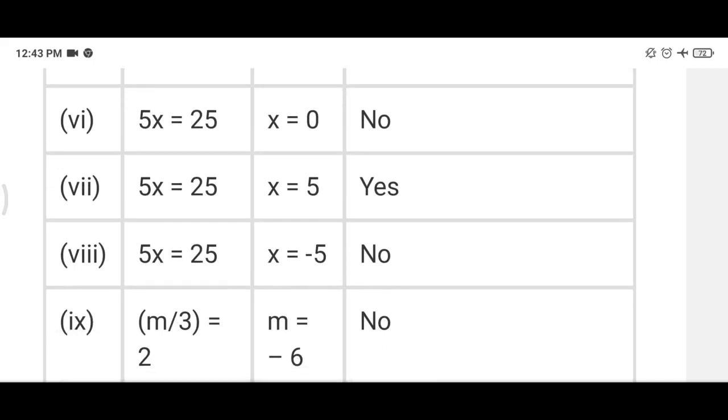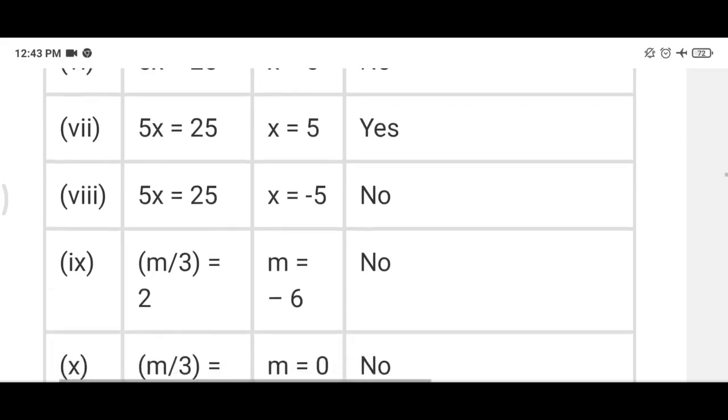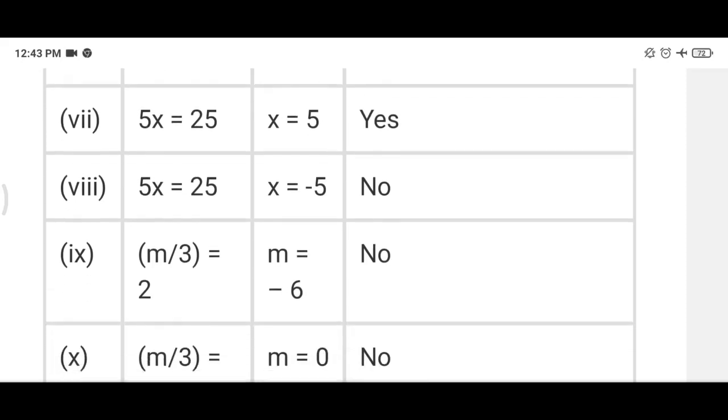Sixth part, 5x equals 25, we put x equals 5. In seventh part we put x equals 0, so 5 into 0 is 0, not 25, that's why no. In eighth part, we will put x equals to 5, so 5 fives are 25, this is why it is yes.